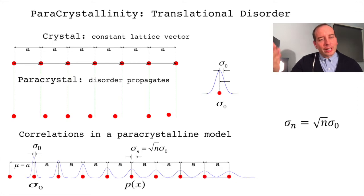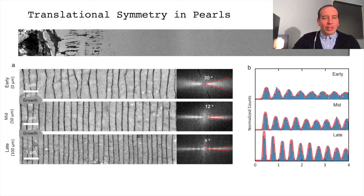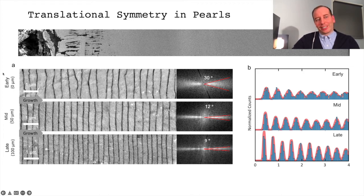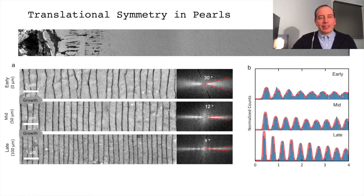So, do pearls have translational symmetry? If we look at a high-resolution image taken across the entire pearl, this is a radius of around 1.5 millimeters, we actually resolve the tablets across the entire pearl, and I'm showing segments here from an early region, a mid-region, and a late region. The early nacre is very disordered. It has an interface that wanders with a surface normal that varies around 30 degrees, given in the Fourier transform.